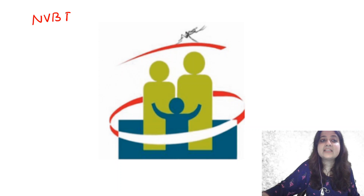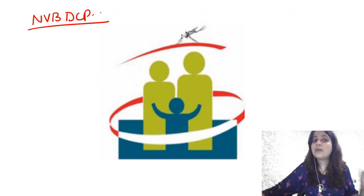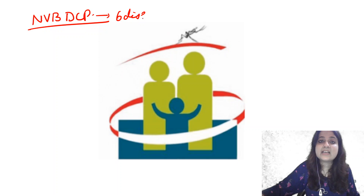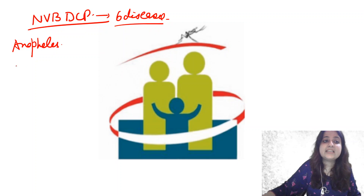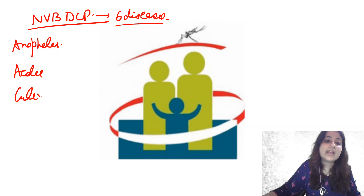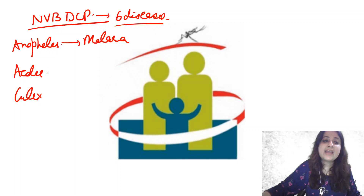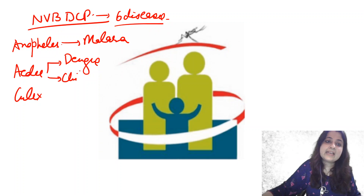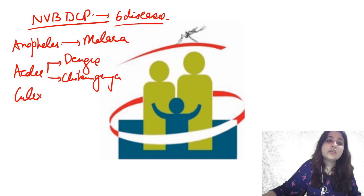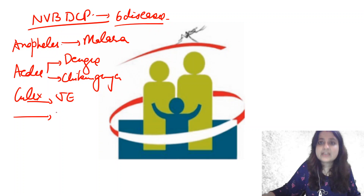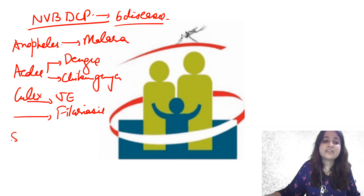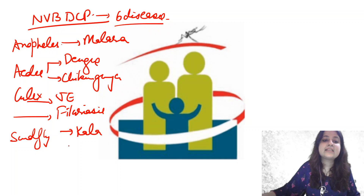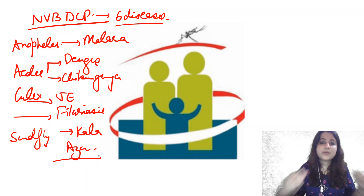This is the National Vector Borne Disease Control Program, which covers six diseases. The three most important adult mosquitoes are Anopheles, Aedes, and Culex. Anopheles transmits malaria; Aedes transmits dengue and chikungunya; Culex transmits Japanese encephalitis, filariasis, and is also associated with kala-azar or visceral leishmaniasis. So this program protects us from six diseases.